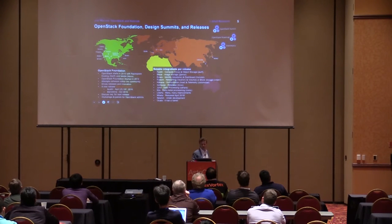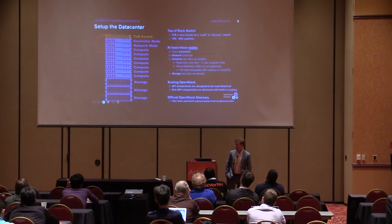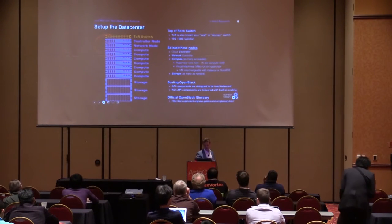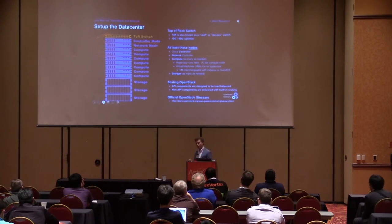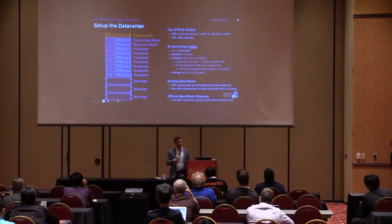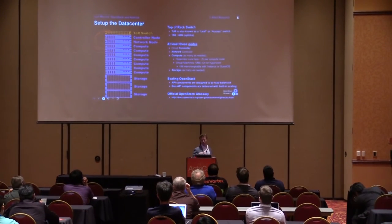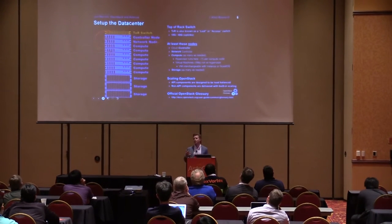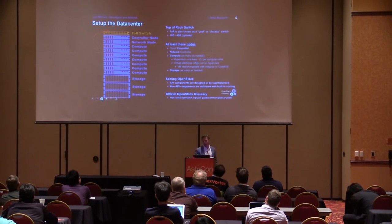A network node or network controller gets created next — again, install Ubuntu 16.06, install a software package called Neutron. It's a controller of sorts but it only controls networks. Any virtual network infrastructure we're going to create — virtual routers, virtual subnets, networks — Neutron will play a role in that.